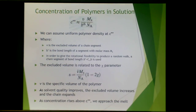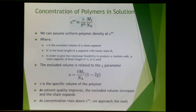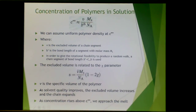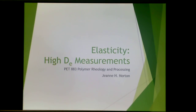We can assume uniform polymer density at C**, where V is the excluded volume of a chain segment, B' is the bond length of a segment of molar mass M_s, and a chain segment of bond length B' = C∞B is used to give rotational flexibility for a random walk. The excluded volume is related to the chi parameter, where V is the specific volume of the polymer; as solvent quality improves, the excluded volume increases as the chain expands. As concentration rises above C**, we approach polymer in the melt. This concludes Elasticity, High Debra Number Measurement Part 1, Video 2.